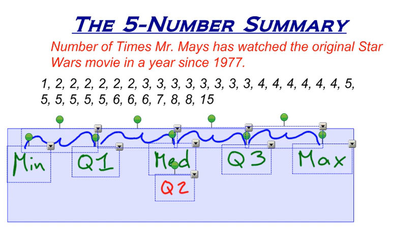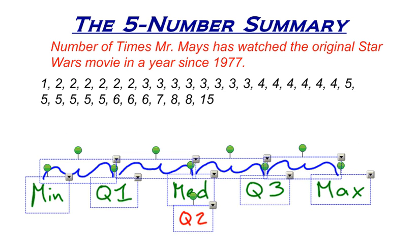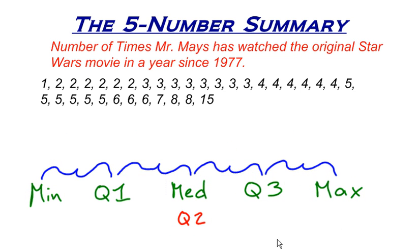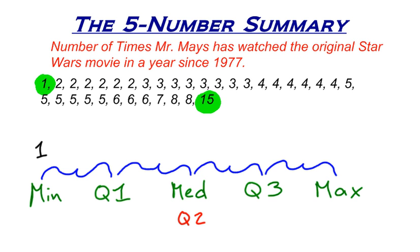How do we find these? Well, it's pretty easy to find most of them — three of them we can find very easily. The minimum is the data value with the least value, and in this case that is one. So the minimum is one. The maximum is another easy one to find — that is the data value with the greatest value, the largest value, and that's 15 in this case.